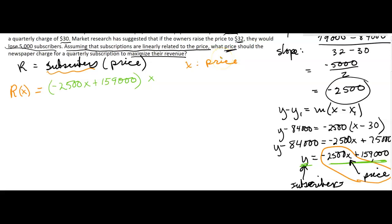If I multiply that out, I'm going to get the revenue to be negative 2,500x squared plus 159,000x. Now that is quadratic, so we can find—we want to maximize—so we can find the vertex.